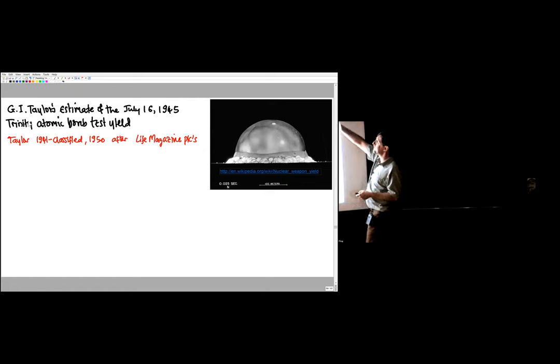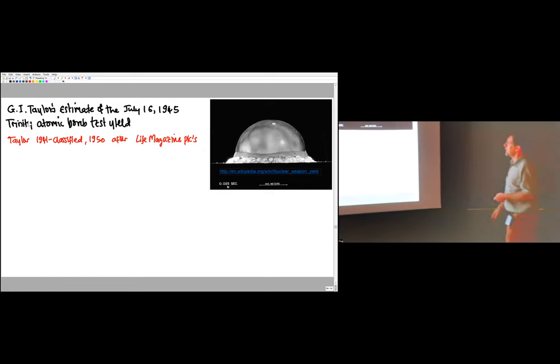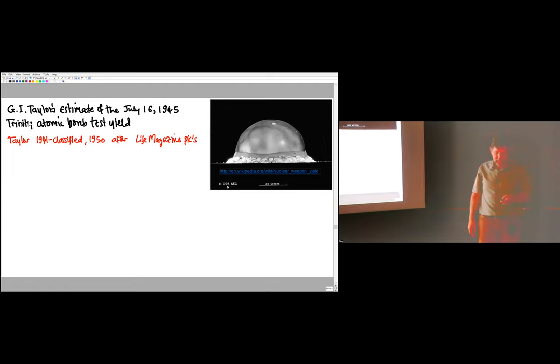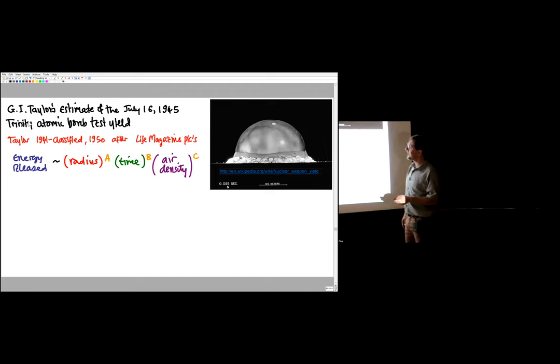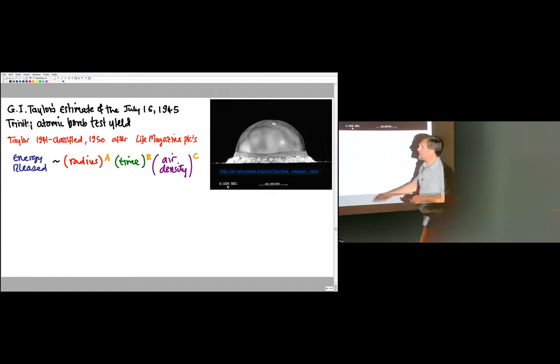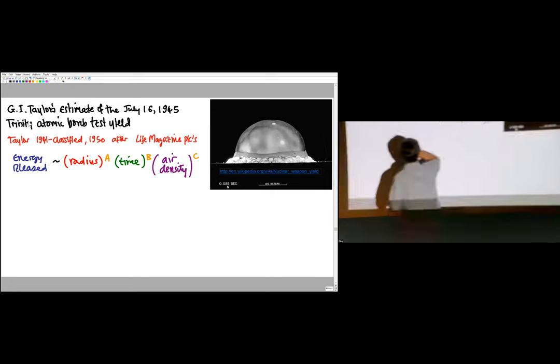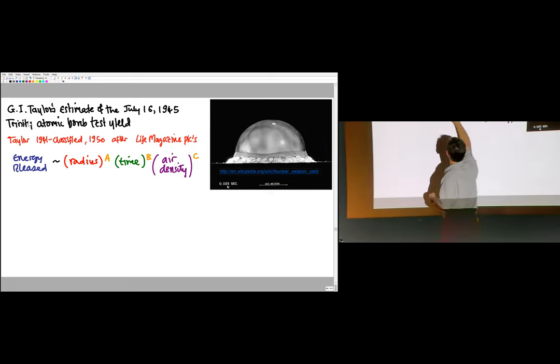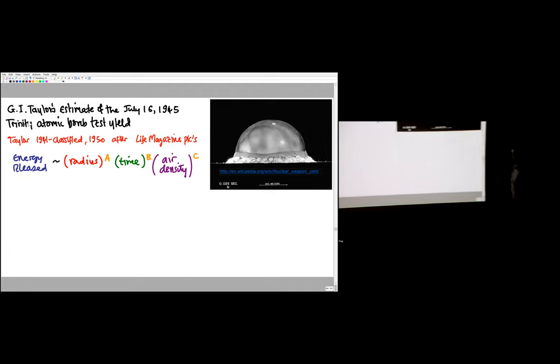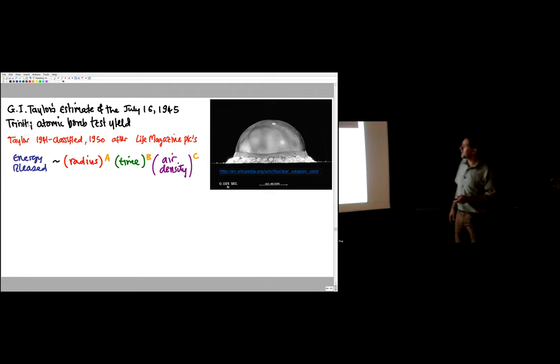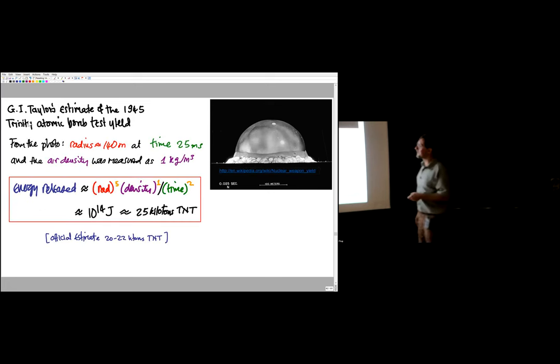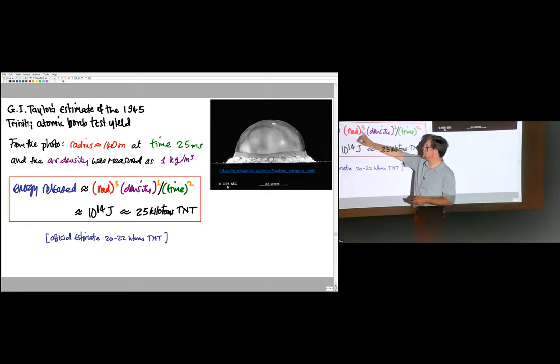So here's the photograph published in a magazine of a fireball. What we're told is that this length scale is about 100 meters. We're told that the photo is taken about 0.025 seconds after the explosion. This photo was published in Life magazine. Taylor said—and in fact he already knew it—that the energy released at a certain time goes like the radius to a power times time to a power. And then he used our friend, dimensional analysis, to work out A, B, and C. We won't do it. This is what he got: the energy released goes like the radius of the fireball to the fifth power times density of air to the first power divided by the time squared.